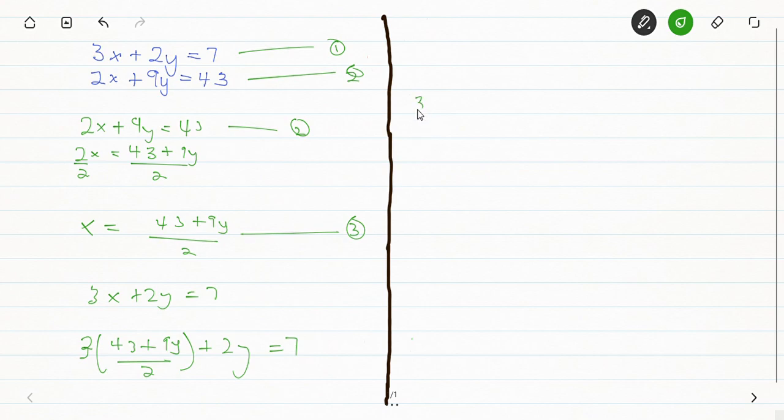So we are going to get 3 bracket 43 minus 9y for that side, then plus 4y equals 14.